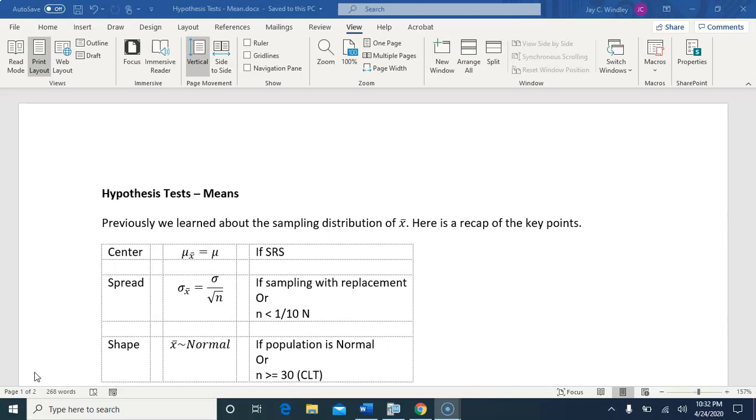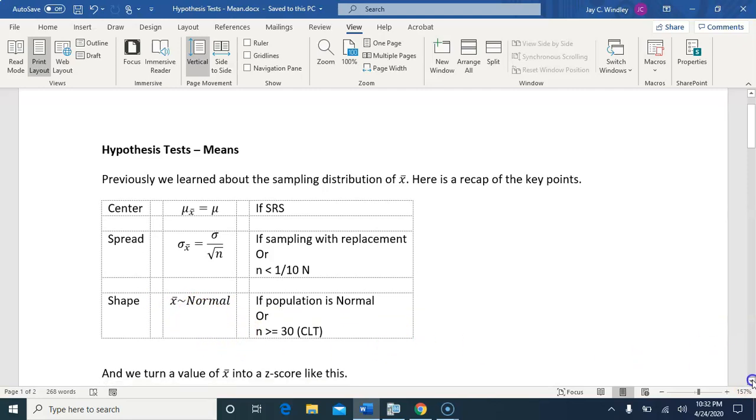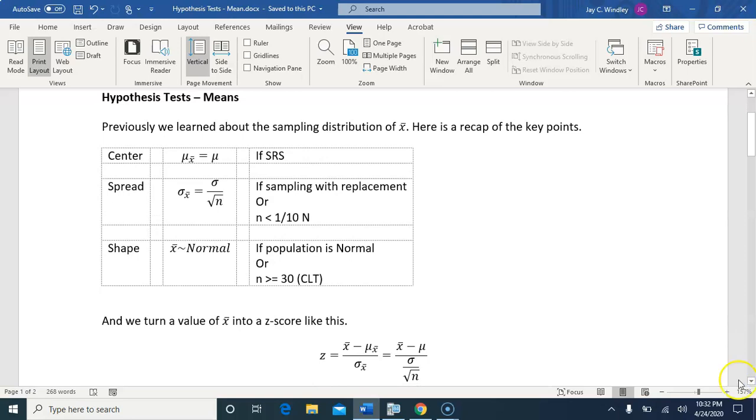When we do a hypothesis test for a mean, there's a couple things we have to remember. First of all, details that we learned about the sampling distribution of X bar, the mean of the X bars, the standard deviation of the X bars, and when the X bars follow a normal distribution or approximately a normal distribution. And then we had a formula for turning a value of X bar into a Z score by subtracting the mean and dividing it by the standard deviation.